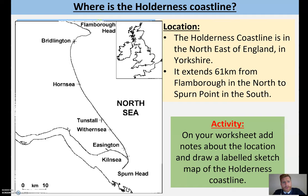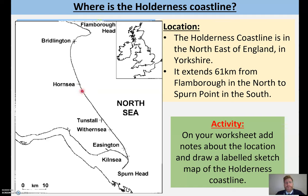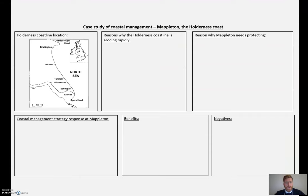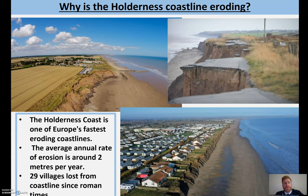Welcome back — you should now have the sketch map drawn. Mapleton is a small village close to Hornsea; you might want to mark it on your map where the cursor is showing. This is what your A3 sheet should be looking like now, with your map in there. The next thing we're going to look at is why the Holderness coastline is eroding so rapidly.